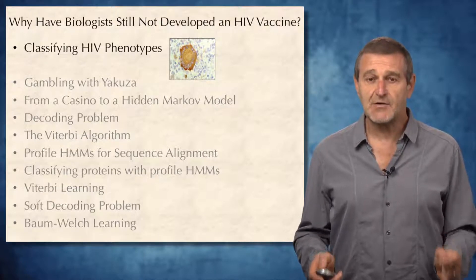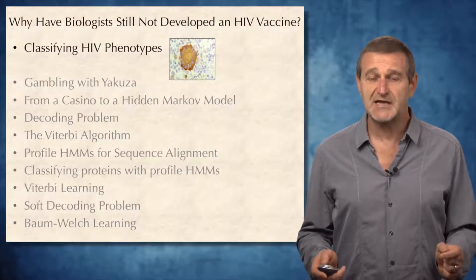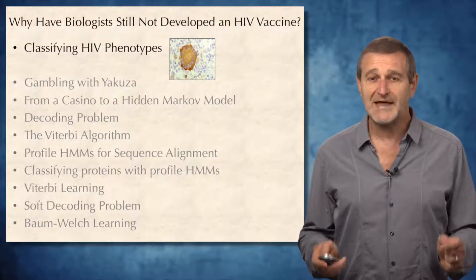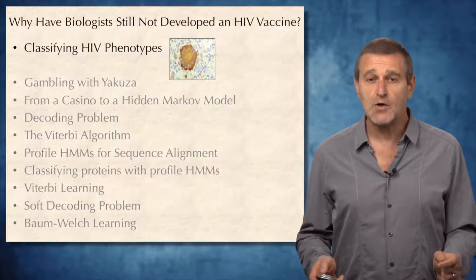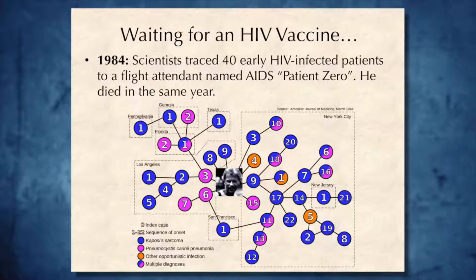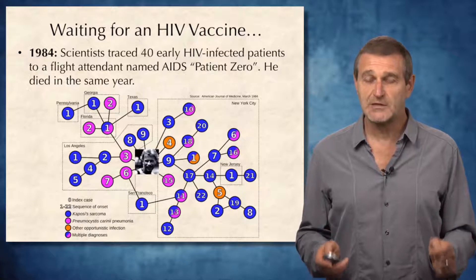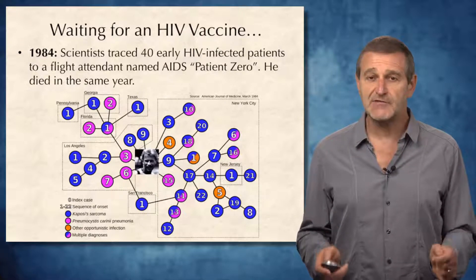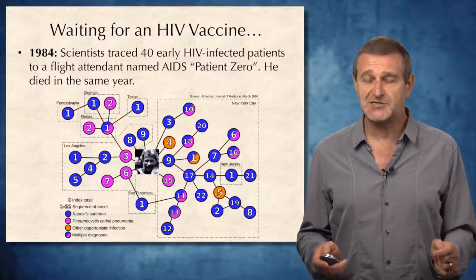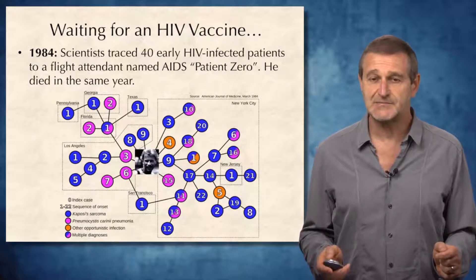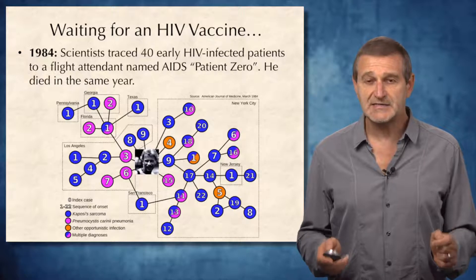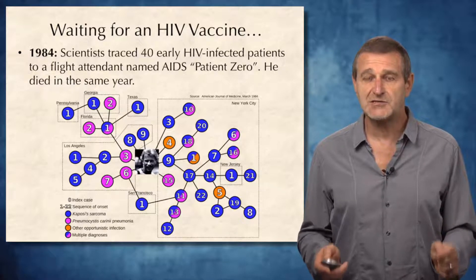We will start by classifying HIV phenotypes and asking what HIV phenotype Gaeta Duga had. Gaeta Duga was a flight attendant who traveled the world and engaged in sexual liaisons with hundreds of men. In 1984, he became the most studied HIV patient in the world, when biologists constructed a network of 40 HIV patients whom he had infected. He died in the same year and was named AIDS Patient Zero.